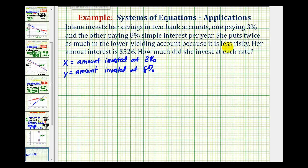The first equation is going to come from the fact that she puts twice as much money in the lower yielding account because it is less risky. So there is twice as much money at 3% than there is at 8%. To write an equation to represent this relationship, we would have x is equal to 2 times y. There's twice as much money here at 3%, so if we want them to be equal, we have to multiply the amount of money at 8%, which is y, by 2.